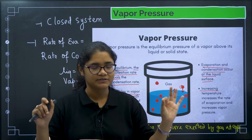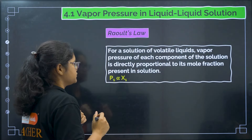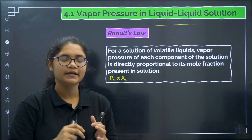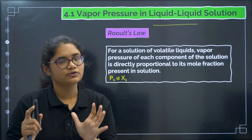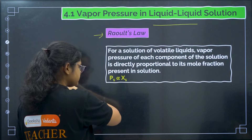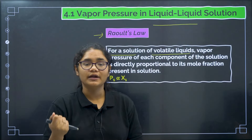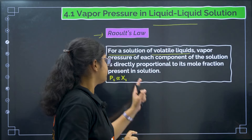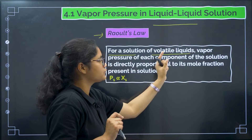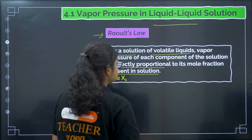Now let us go to vapor pressure in liquid-liquid solutions. In a liquid-liquid solution, both the solute and the solvent are liquids. According to Raoult's law, for a solution of volatile liquids, the vapor pressure of each component is directly proportional to its mole fraction present in the solution. If we have two volatile liquids A and B, the vapor pressure of A is proportional to the mole fraction of A, and the vapor pressure of B is proportional to the mole fraction of B.